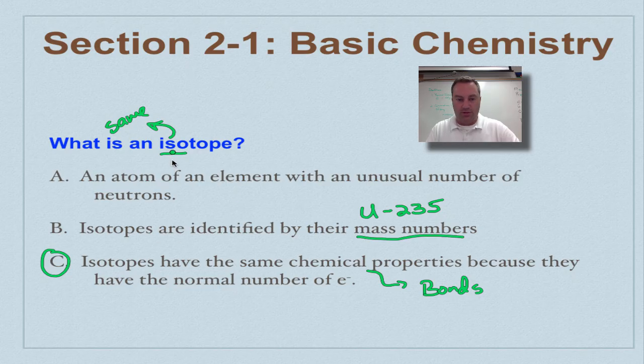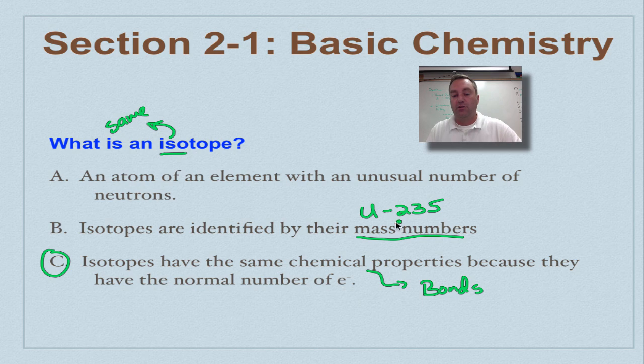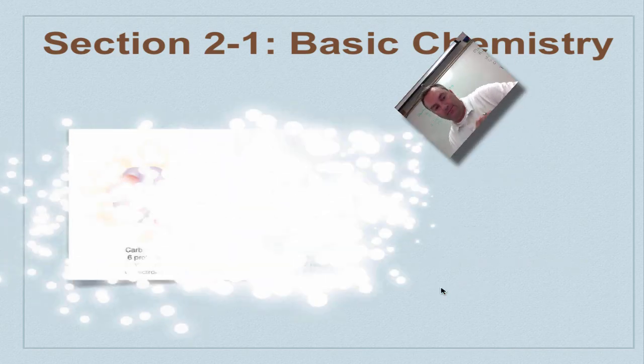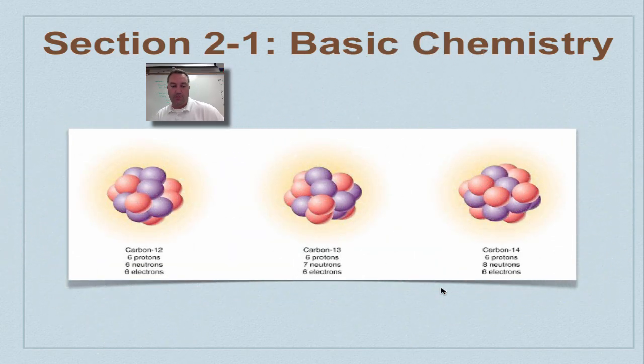I want to make sure you understand this stuff. If isotopes are the same element, different number of neutrons, isotopes are identified by their mass numbers, and they have the same chemical properties. If you don't understand those words, we've got a picture to help you out.